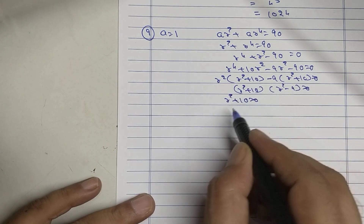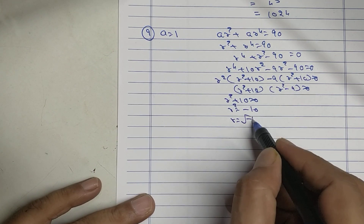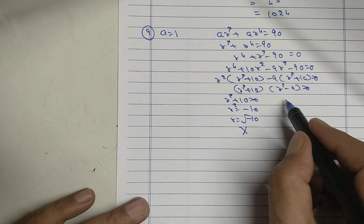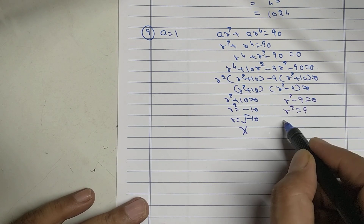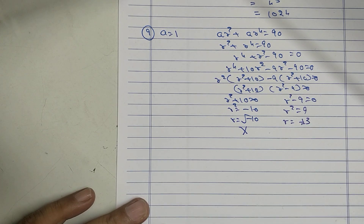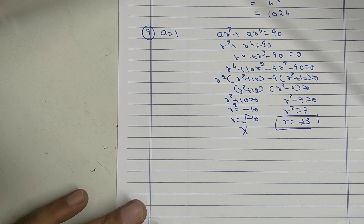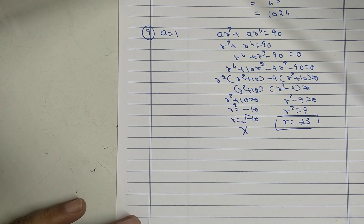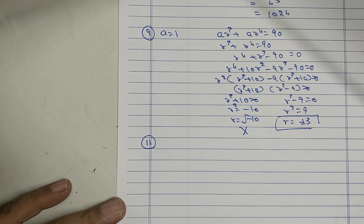From r squared plus 10 equals 0: r squared equals minus 10, so r equals minus root 10 — not possible. From r squared minus 9 equals 0: r squared equals 9, so r equals plus or minus 3. Therefore the common ratio r equals plus or minus 3.